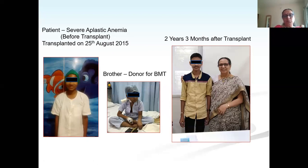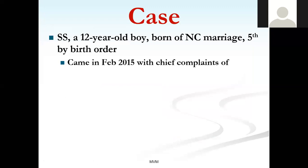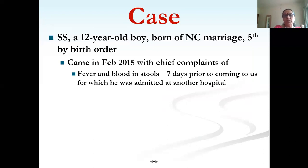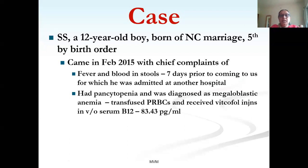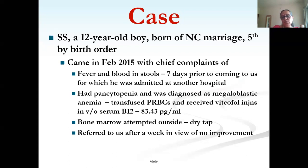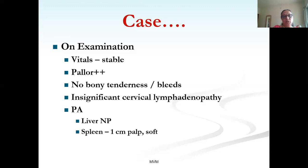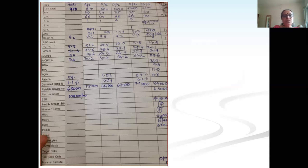Case 4: A 12-year-old boy, fifth-born of non-consanguineous parents, presenting in February 2015 with fever and blood in stools for seven days. At another hospital he was diagnosed as megaloblastic anemia, transfused packed red cells, and received B12 injections for low serum B12. Bone marrow was attempted but was a dry tap — and he was referred to us after a week with no improvement.